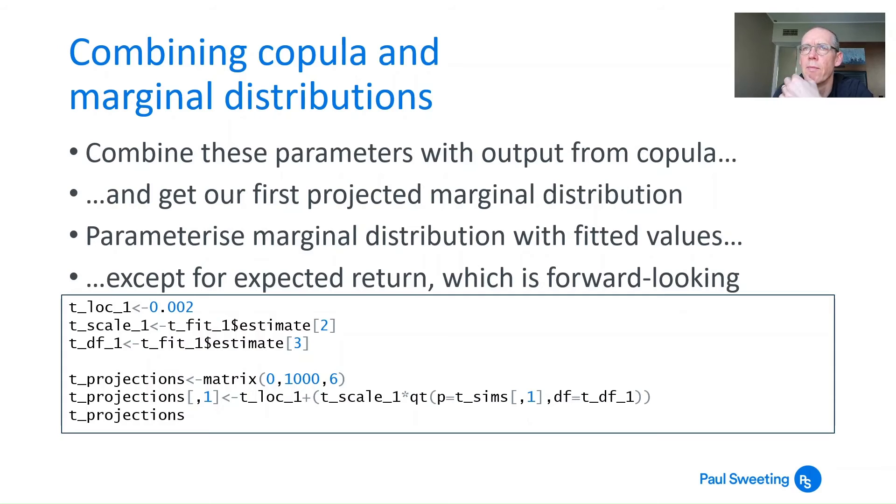To parameterize it, we're going to parameterize with the fitted values, except for expected return. When doing this kind of work, for correlations I take historical data, for volatility usually historical as well. But for expected returns, the future's not necessarily going to look like the past, so I usually have a different approach for forward-looking returns. You can use this by saying my forward-looking return is 0.002, and put that into parameter tloc_1.